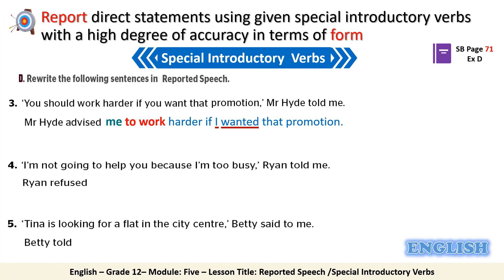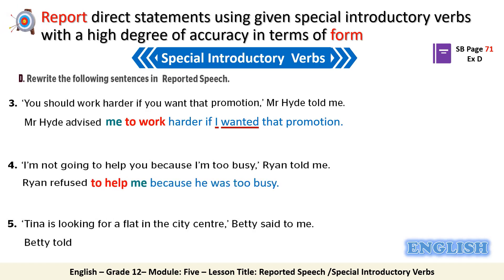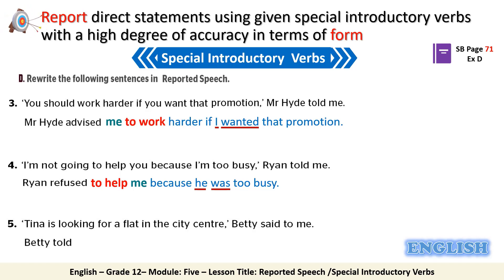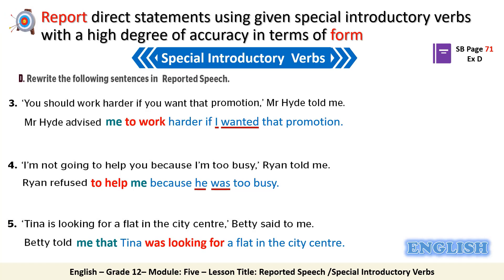Sentence four: 'Ryan refused to help me because he was too busy.' We change 'I' to 'he' and 'come' to 'was.' Sentence five: 'Betty told me that Tina was looking for a flat in the city centre.'